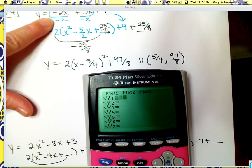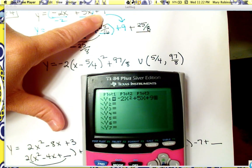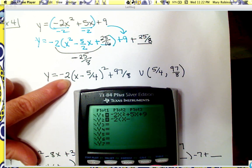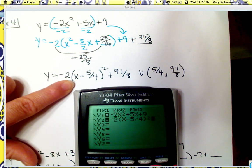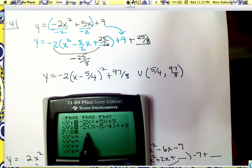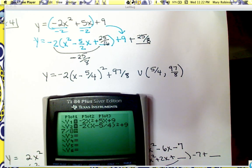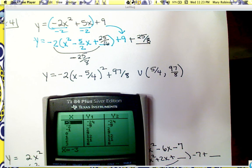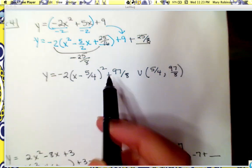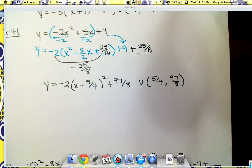Let's verify: negative 2x squared plus 5x plus 9 equals negative 2 times the quantity x minus 5 fourths, squared, plus 97 eighths. Checking the table, y1 and y2 match up. So I have correctly written this function from standard form into vertex form. That concludes this video, thank you.